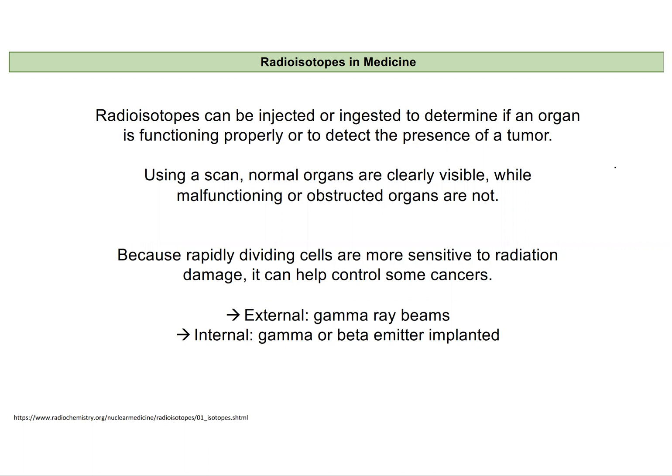But we can take advantage of radioisotopes, especially ones with short half-lives, to image organs, to detect the presence of tumors, and to even treat cancer. They can be injected or ingested, and we can use that to determine whether or not something is functioning properly, or detect if there's a tumor or cancerous cells present.